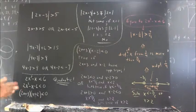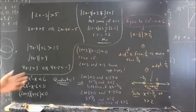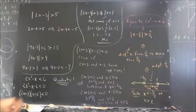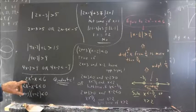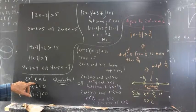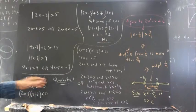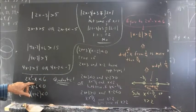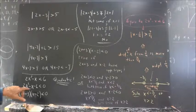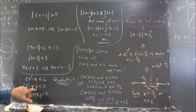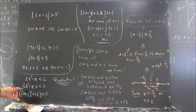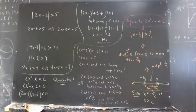This is a quadratic inequality. Whenever you have a quadratic expression, you want to compare it with 0. So we subtract 6 from both sides to get 2x squared minus x minus 6 less than 0, which we can now compare with 0.